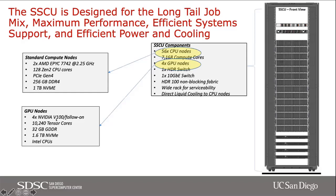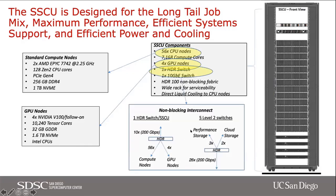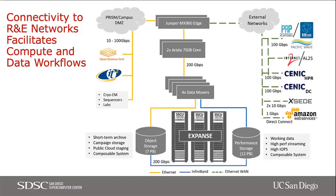On the GPU nodes, we have four NVIDIA V100s with 32 gigabytes GDDR on each V100 GPU, 1.6 terabytes of NVMe, and Intel CPUs on the GPU node. Looking at the network diagram, you can see 56 compute nodes, four GPU nodes, and an uplink of 10 times 200 gigs. The network also plugs into a lot of external FAST networks, with a 25 gig connection on each compute node for quite a bit of external connectivity.